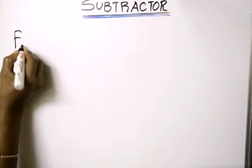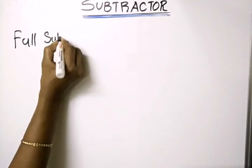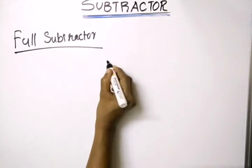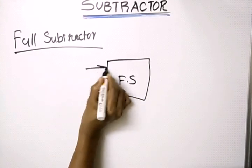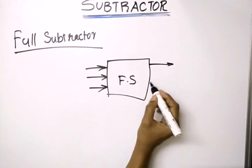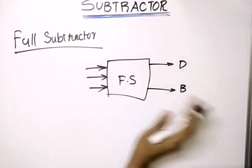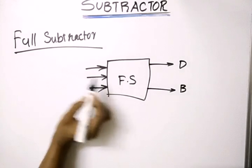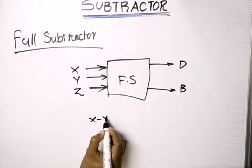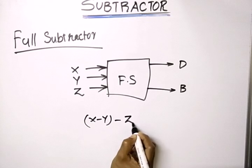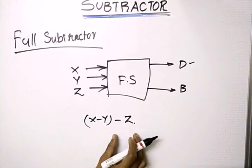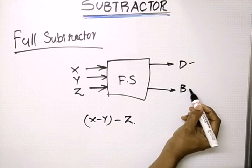Next we are going to discuss about a full subtractor. A full subtractor is a combinational circuit which is used to subtract three bits. Looking at the block diagram, there are three input bits and we can subtract these three bits. The corresponding outputs are difference and borrow, as in the case of half subtractor.